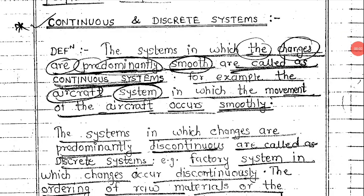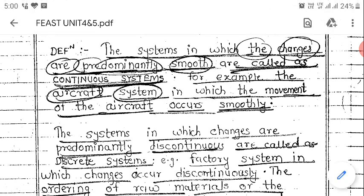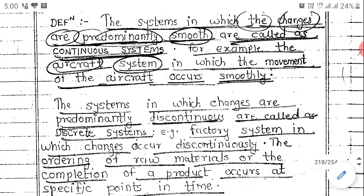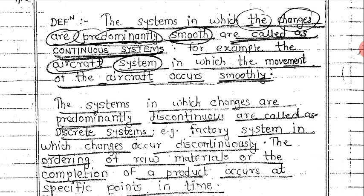Today we are going to study continuous and discrete systems. A continuous system is one where the activities happening inside the system are predominantly smooth. For example, the movement of an aircraft occurs very smoothly, so it is considered a continuous system.